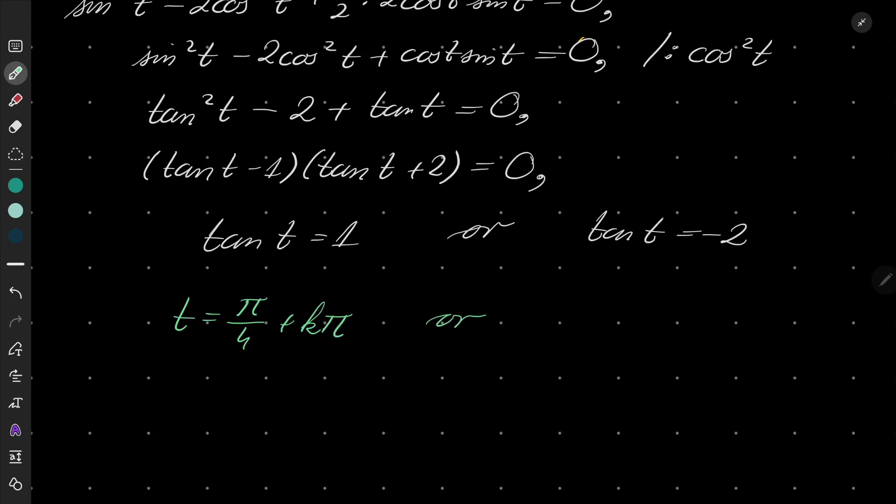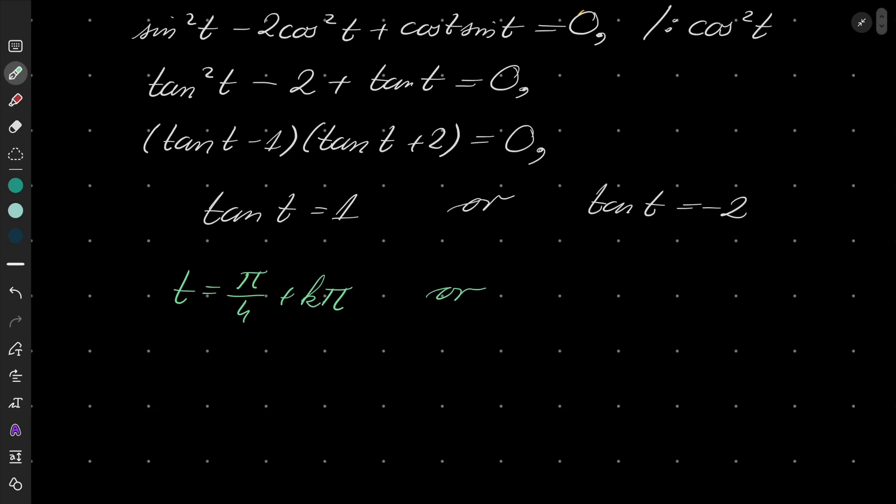And when tangent equals -2, well there is no simple value of t, but by taking the arctangent function on both sides we get arctan(-2). Remember that tangent is periodic, so plus kπ again.